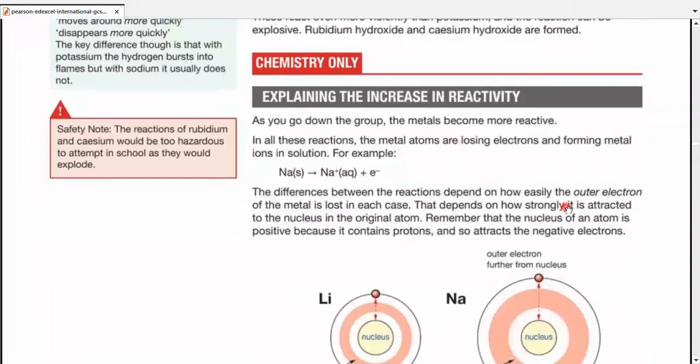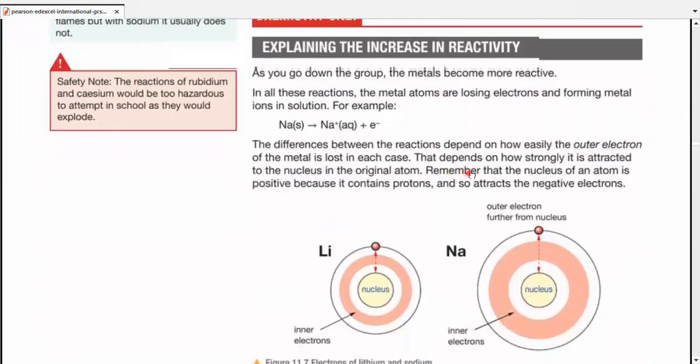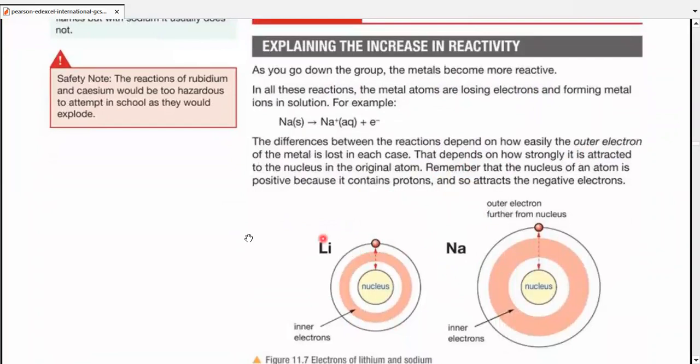Now, explaining the increase in reactivity. When we say, as we go down the group, the metals become more reactive, we need to explain that with the help of the metal structure. In all the reactions, the metal atoms are actually losing one electron, which is present in their outermost shell, and forming metal ions in solution. The difference between this reaction depends from metal to metal, because their size is different. Let's consider the case of lithium and sodium in order to compare them. How easily the outermost electron, that one single electron, is lost in each case depends upon how strongly it is attracted to the nucleus.